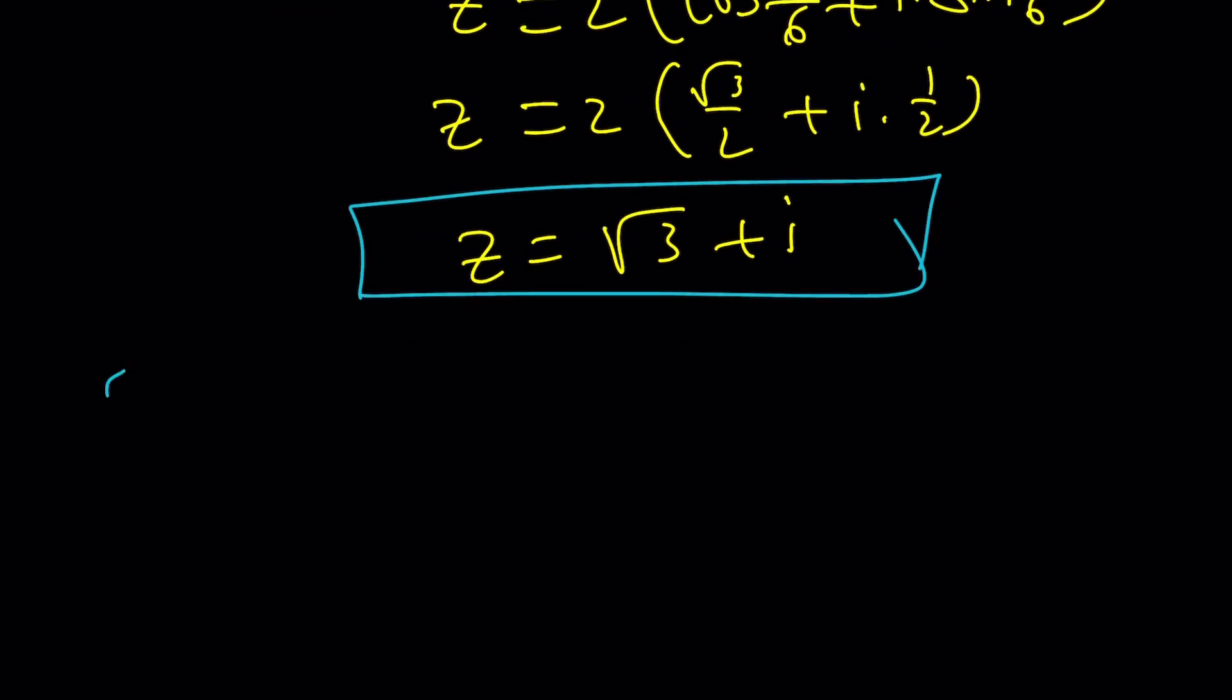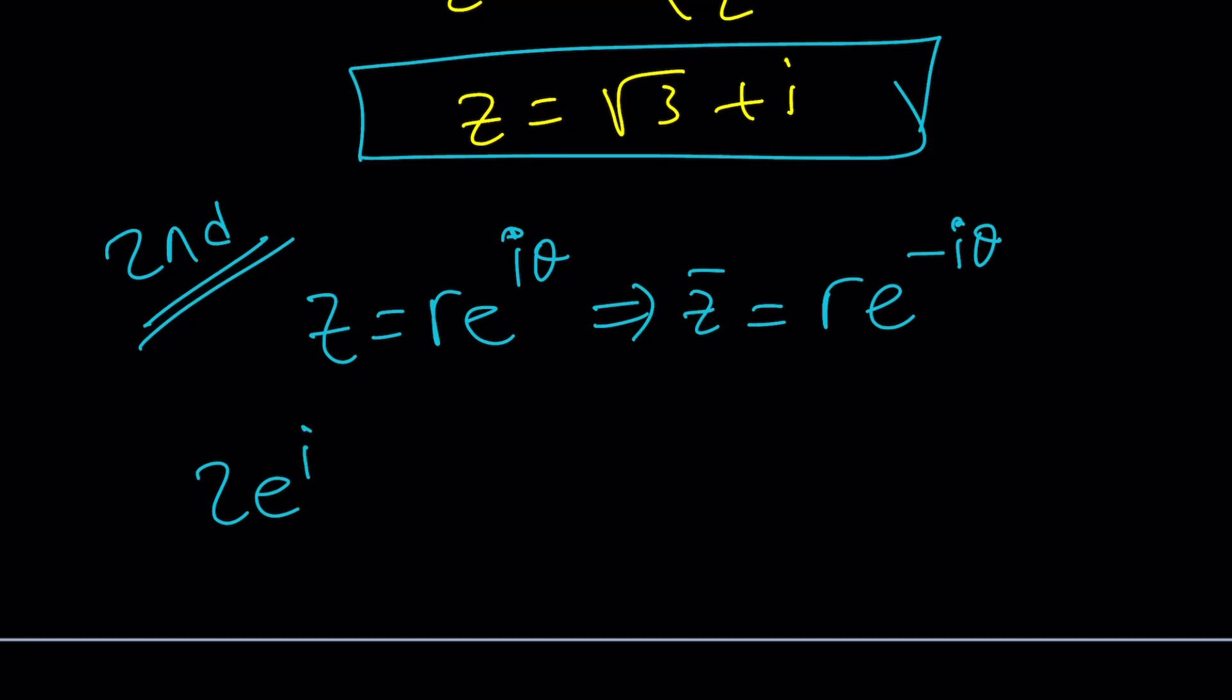But, before we get into those details, or without getting into those details, let's go ahead and take a look at an alternative method. You can also use the polar form, which is very helpful. So, suppose z is equal to that, and z bar is also very easy to find. You just have to negate the angle, because cosine is even. It'll absorb, and sine will spit. So, we'll get that. Make sense?